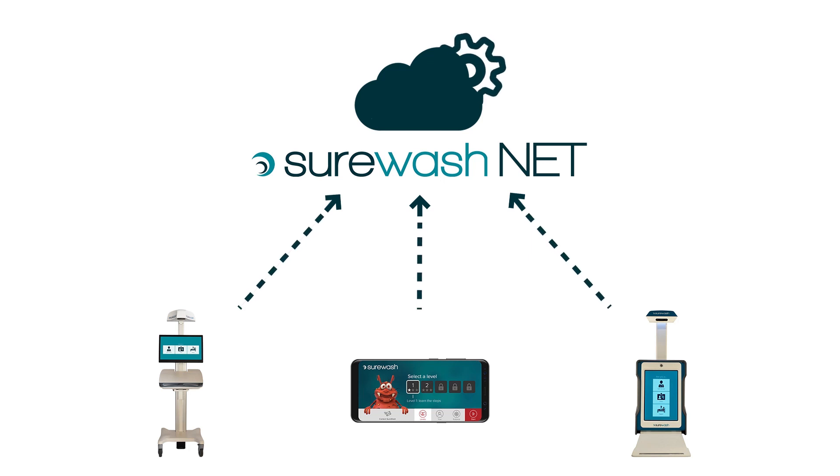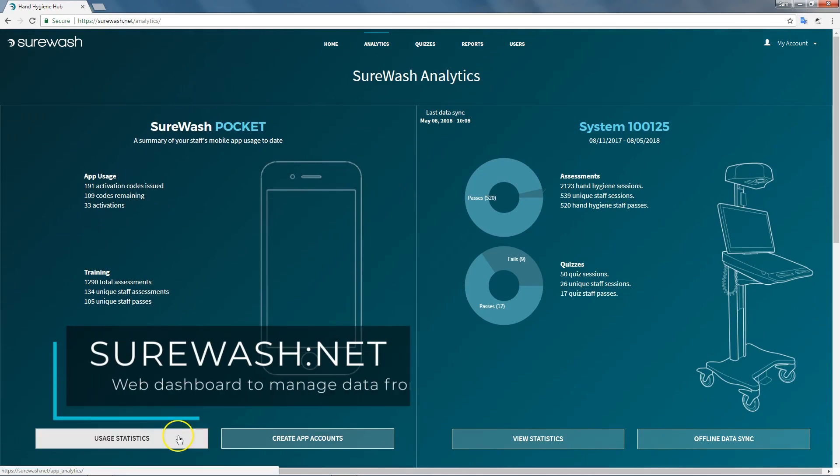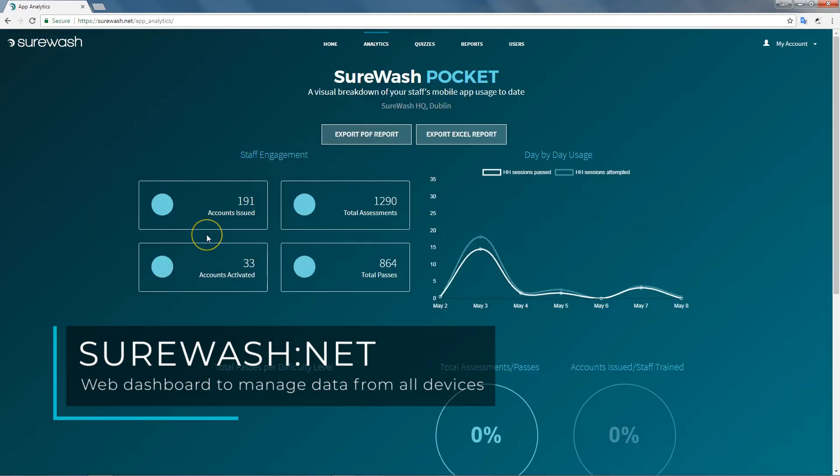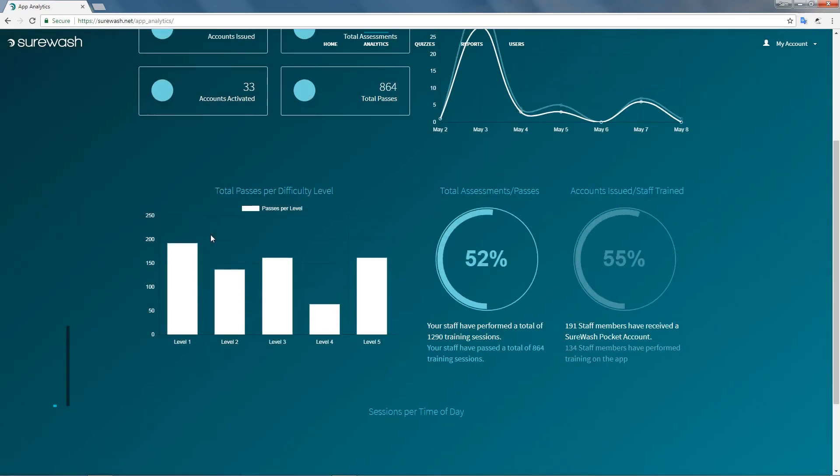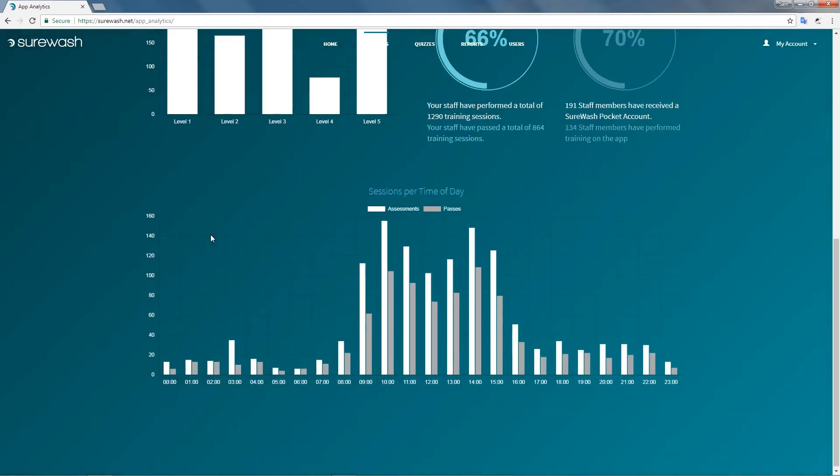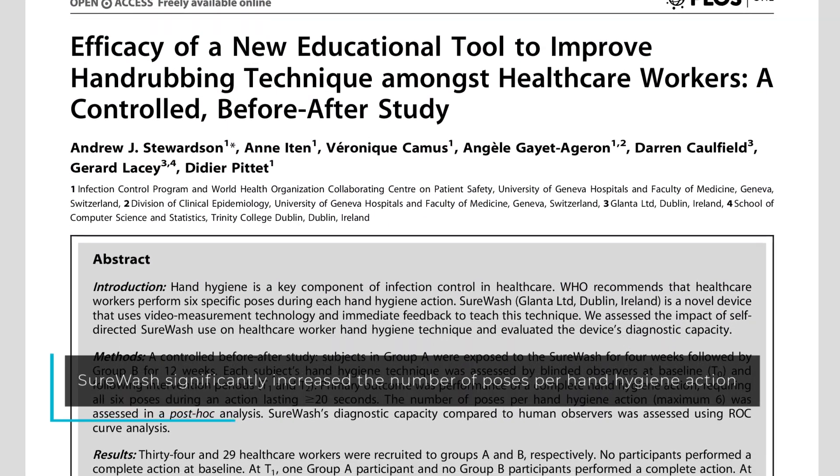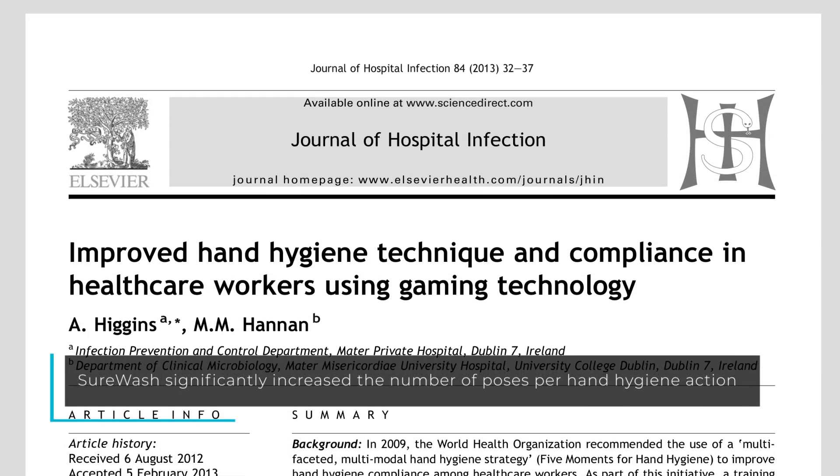Data from the different SureWash systems are combined on a web-based dashboard that provides detailed reports on training and staff competence in hand hygiene. These records can then be used for reporting to regulatory bodies.